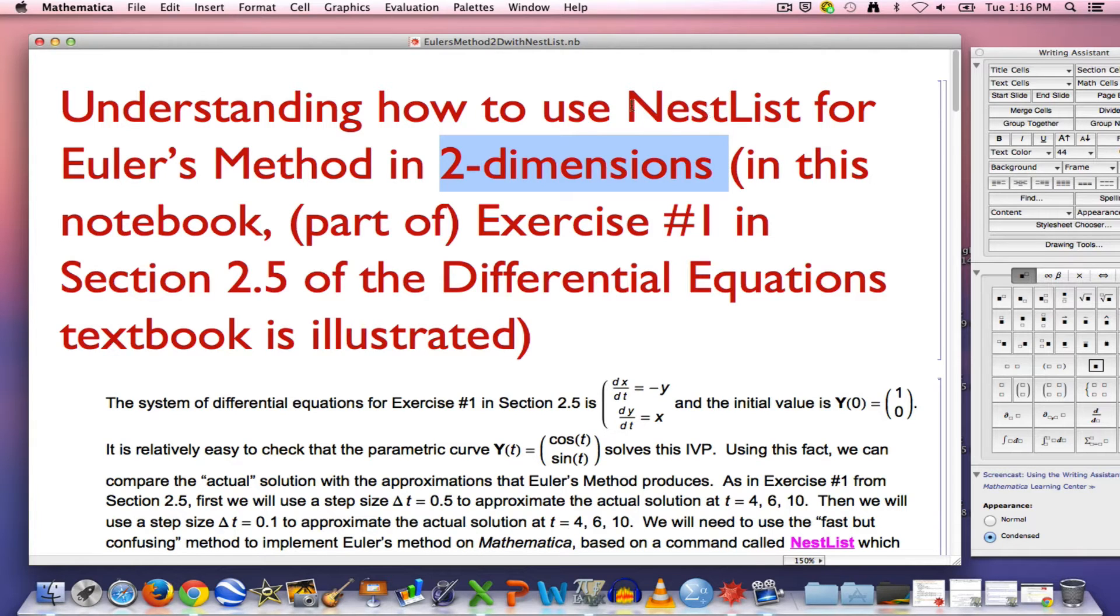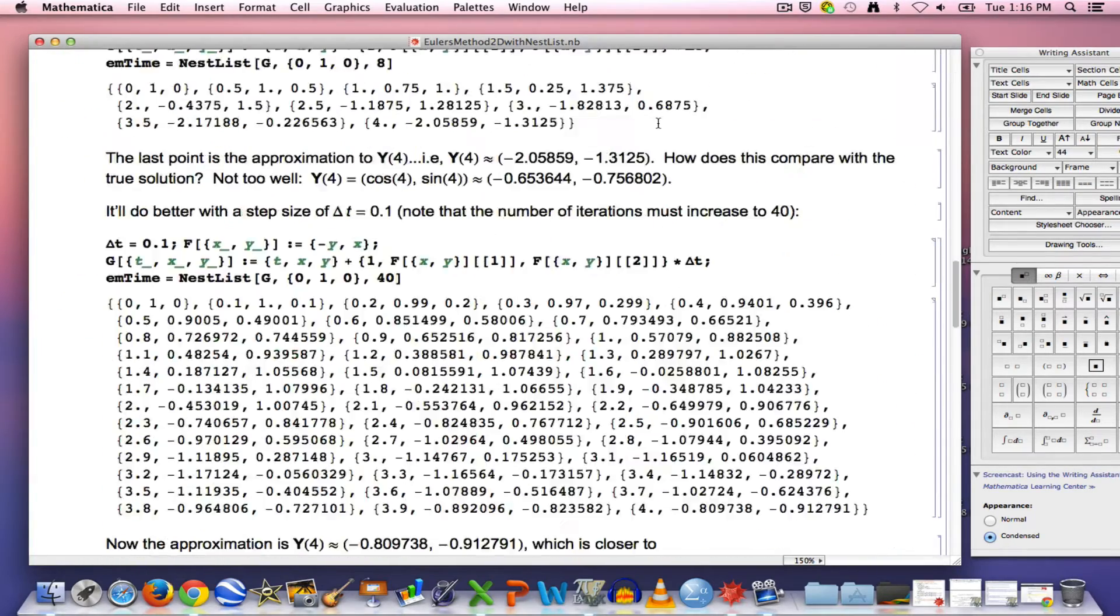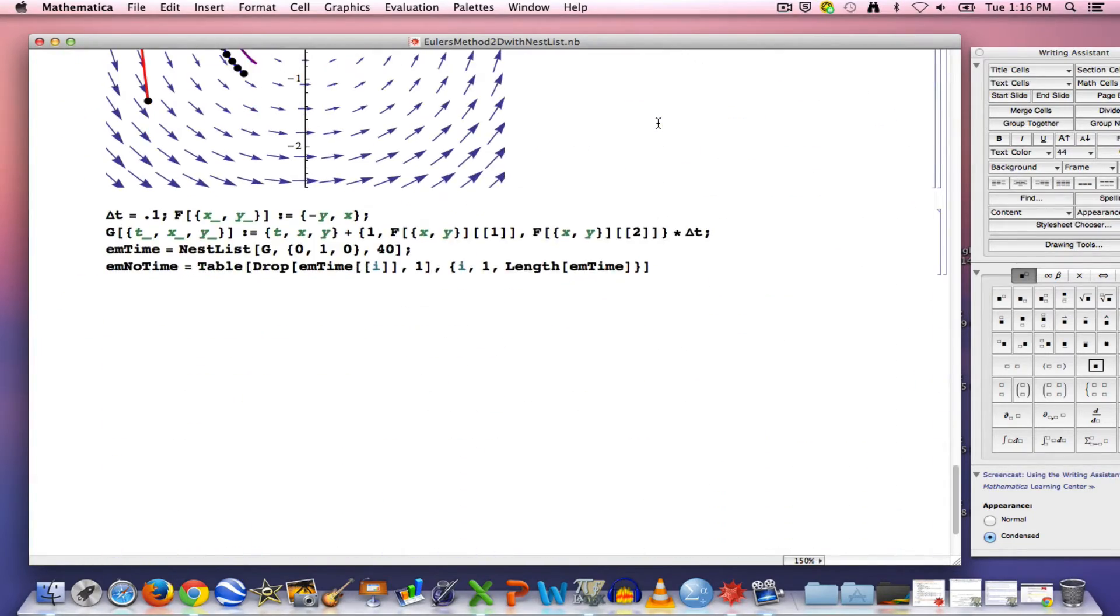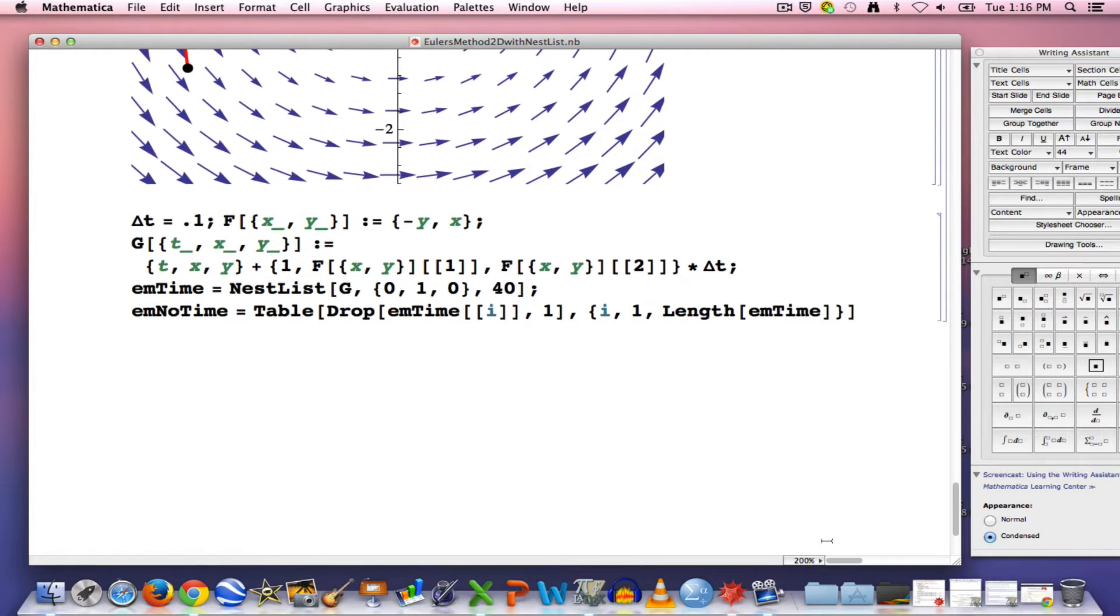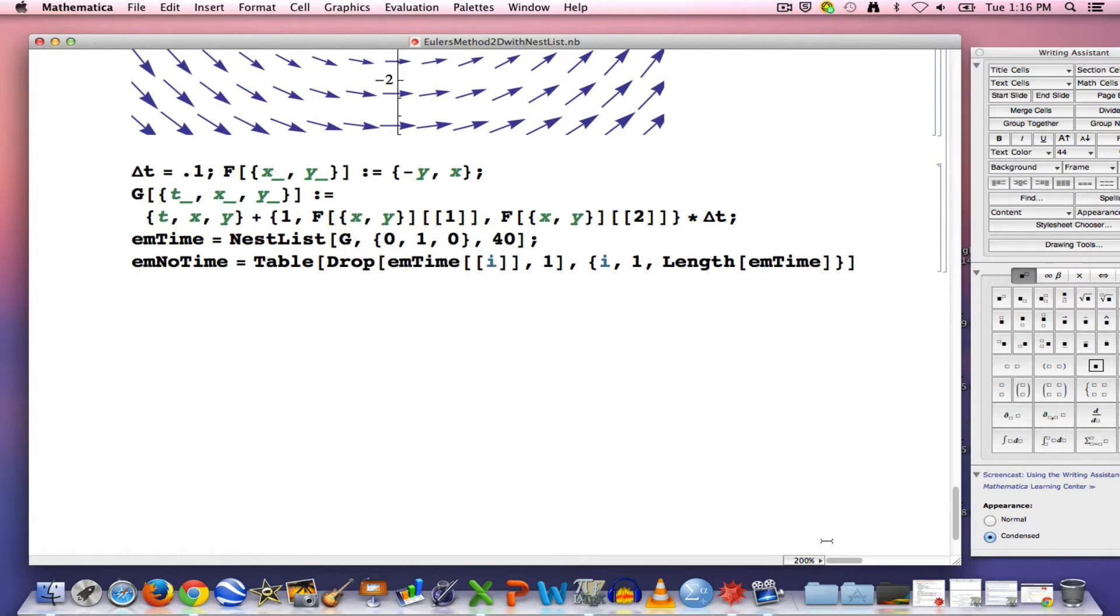I want to first show you how to just modify my code very quickly to get the answer that you want without trying to understand the code too much, and then for the rest of the time I will focus as much as I can on trying to understand how the code works. So I'm going to go down here to the bottom of this notebook, and I'm going to show you a snippet of code that you could either copy and paste if you have access to this notebook or type out yourself to implement Euler's method.